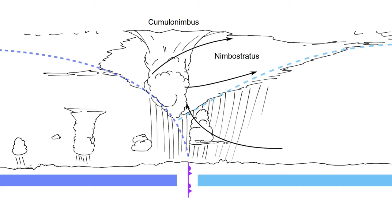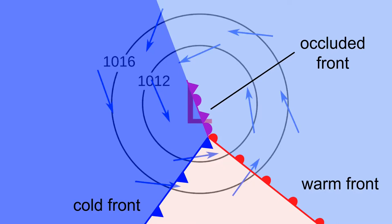This is what it looks like on a weather map. You can still see the warm and the cold front, but near the center of the low you can see the occluded front. It's called an occluded front because the warm air is shielded — occluded — from the low.